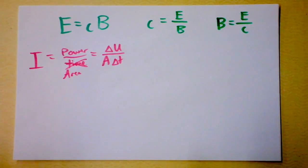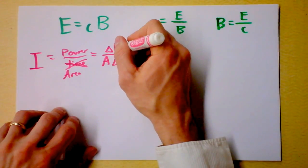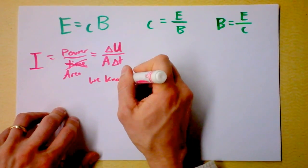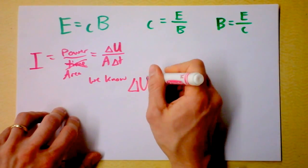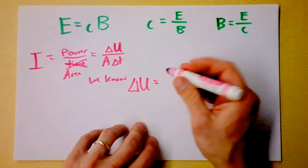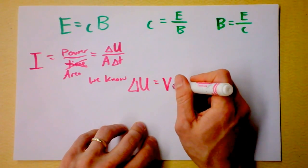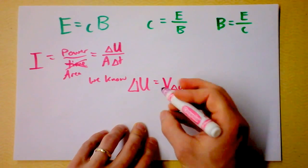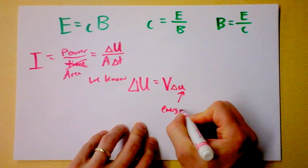But the problem is this is a capital U, and we know that the change in energy is going to be naturally the volume times the change in energy density. That is, that tiny little guy right there is energy per volume.